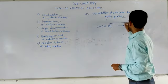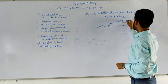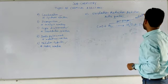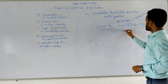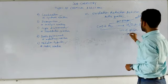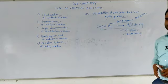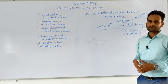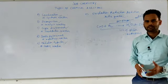In this reaction, H2 to H2O means gain of oxygen — so it is oxidation. And CuO to Cu means loss of oxygen — so it is reduction. In my next video, I will talk about oxidation-reduction reaction on the basis of electron transfer. This is all about the five types of chemical reactions given in class 10. Thank you.